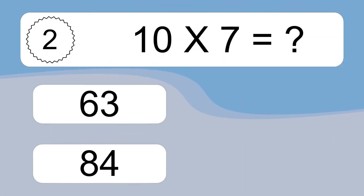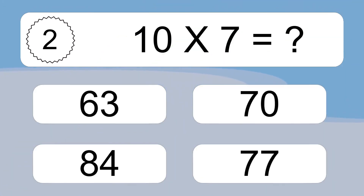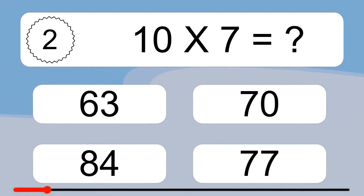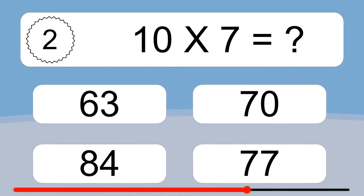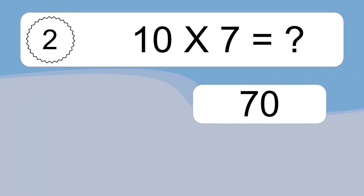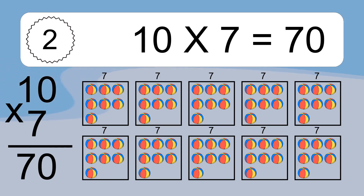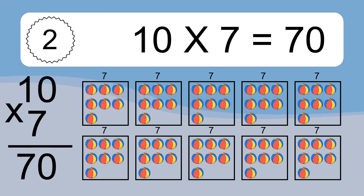10 times 7 equals what? 10 times 7 equals 70. We have 10 boxes, and each box has 7 colorful balls inside. If you count all the balls in all the boxes together, you will have 10 times 7 balls. This equals 70 balls.